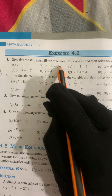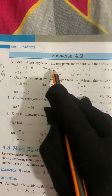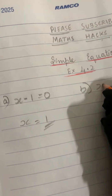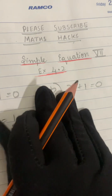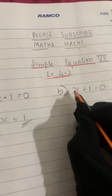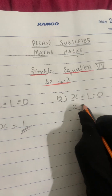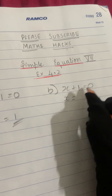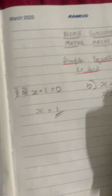Now let's solve the second sum. The same question but only the sign has been changed. This is the variable side and this is the numbers side. So if we shift this plus 1 here, we will get x equals minus 1. The question is x plus 1 equals 0. We decided LHS is the variable side, so let's take x on the left-hand side. Shifting plus 1 to the other side, it becomes minus 1. So x equals minus 1 is our answer.